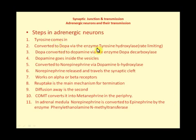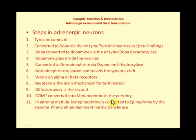To recap: tyrosine is converted to DOPA by tyrosine hydroxylase (rate-limiting enzyme), then to dopamine by dopa decarboxylase, then inside vesicles to norepinephrine by dopamine beta-hydroxylase. Norepinephrine is released and works on receptors. Termination is mainly via reuptake, then diffusion away, then COMT converting it to normetanephrine. In the adrenal medulla specifically, norepinephrine is further converted to epinephrine by phenylethanolamine N-methyltransferase (PNMT).